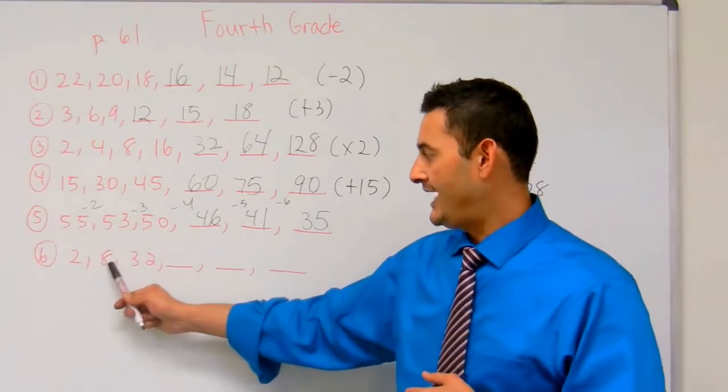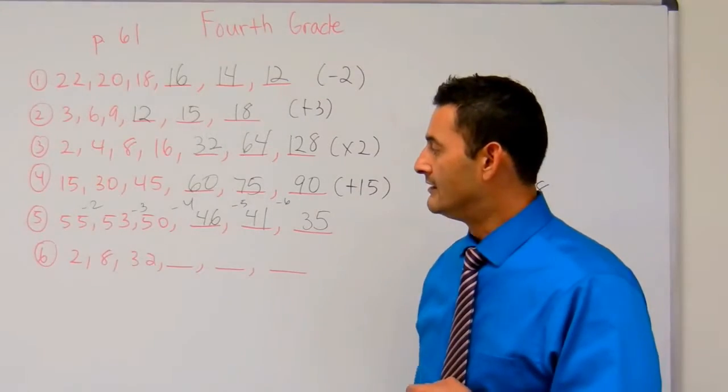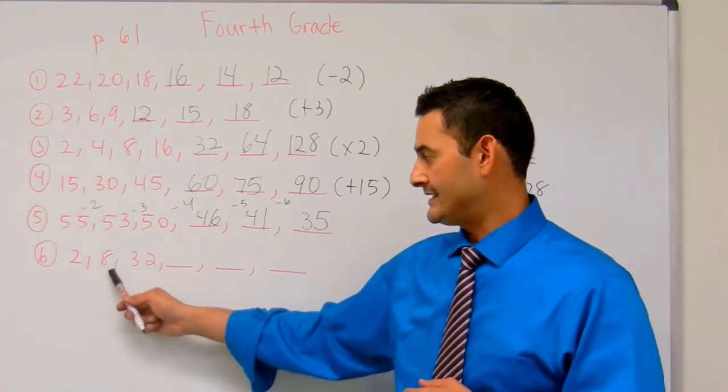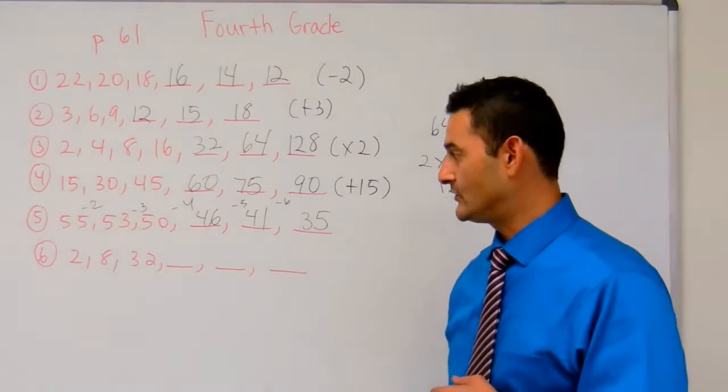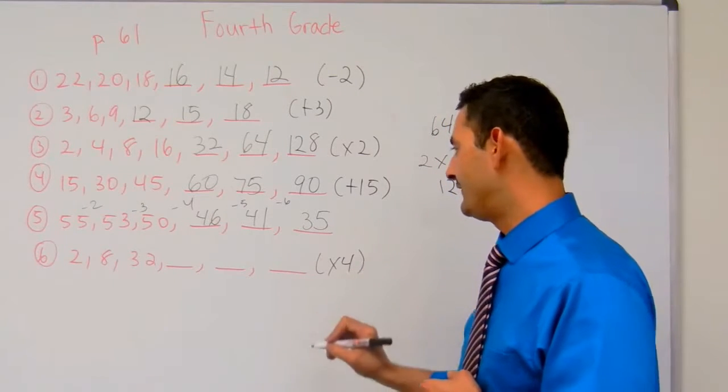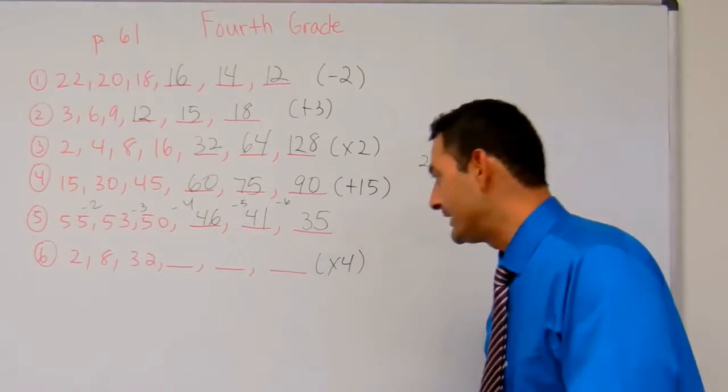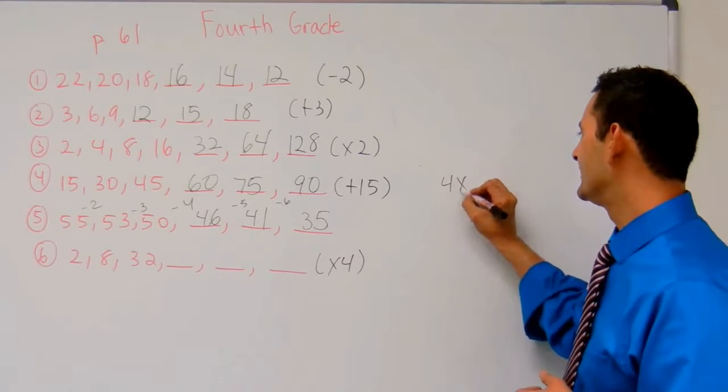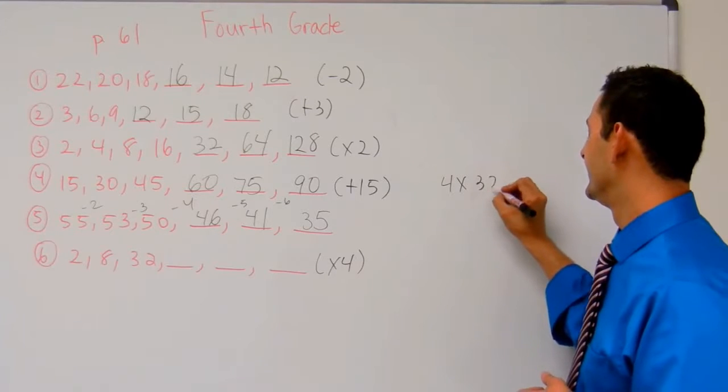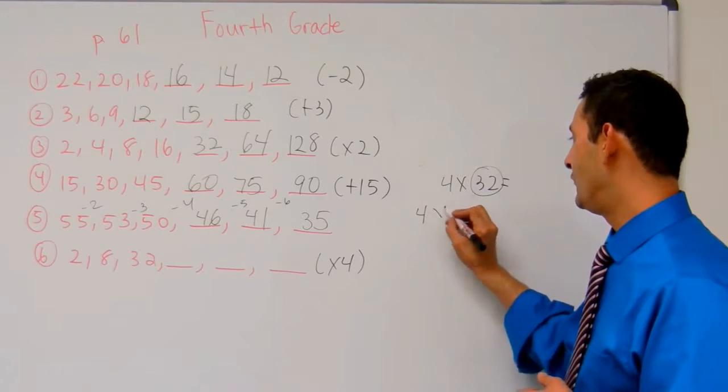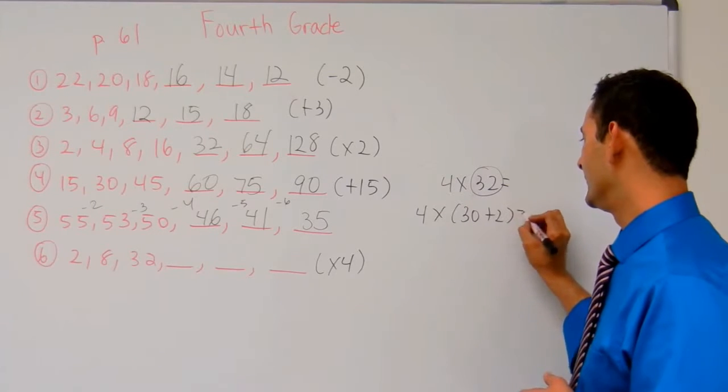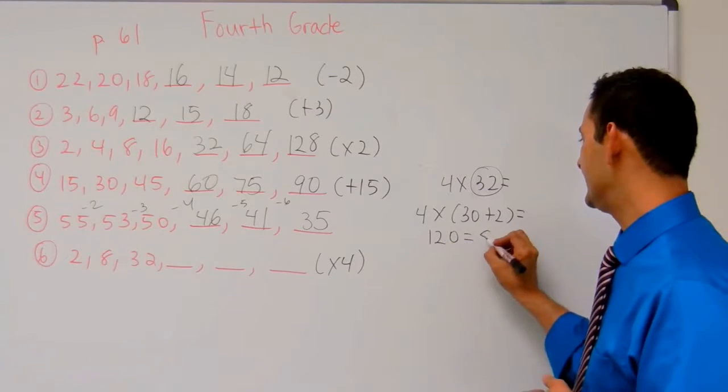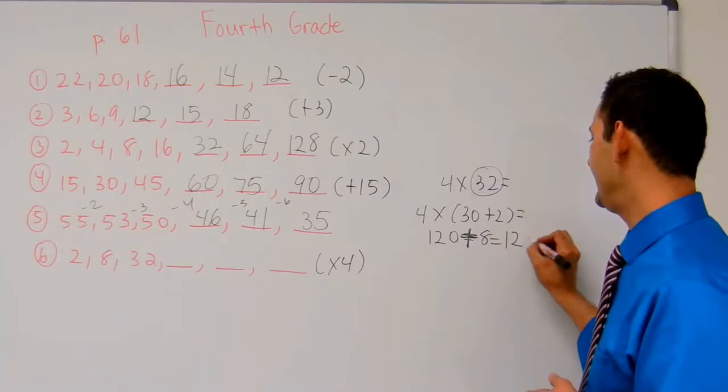Number 6 is, 2 became 8, then 8 became 32. 2 plus 6 is 8, 8 plus 6 is 14, that's not 32. 2 times 4 is 8, 8 times 4 is 32. That's going to work. So here, I'm multiplying by 4. So if I multiply this by 4, I'm going to use the distributive property of multiplication. So I'm going to do 4 times 32 equals. I'm going to break this up. It's going to be 4 times 30 plus 2 equals. 4 times 30, 120, plus 4 times 2 is 8. 120 plus 8 equals 128.